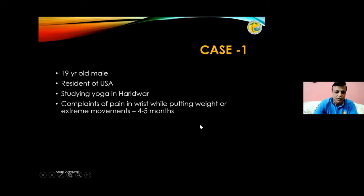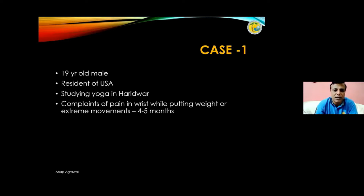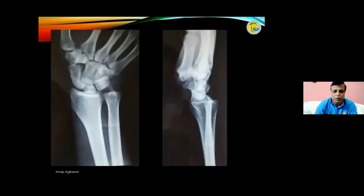I'll be speaking on scapholunate dissociation. This is a case example: a 19-year-old male, a resident of the USA studying yoga in Haridwar, who kept complaining of pain at rest while putting weight or with extreme movement for the last four to five months. He went to different orthopedic surgeons. This was the X-ray done — it looks quite normal — and he was given painkillers and rest, and the diagnosis was missed.